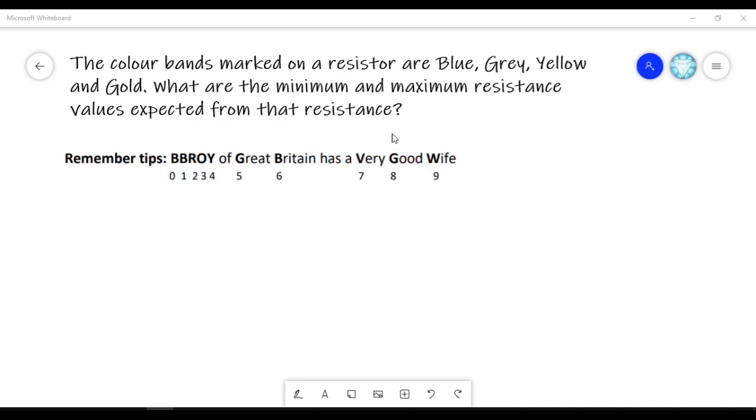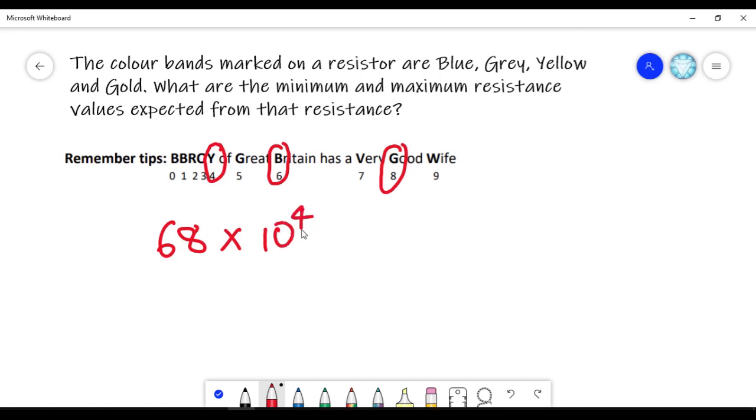First blue is 6, grey is 8, so 68 is the first significant digits. Yellow which is 4, multiply it by 10 raised to 4. Gold is the tolerance.